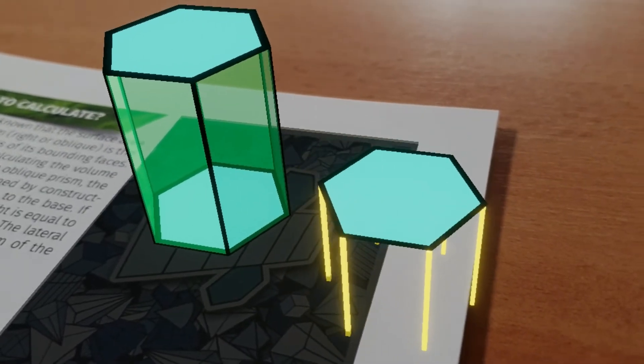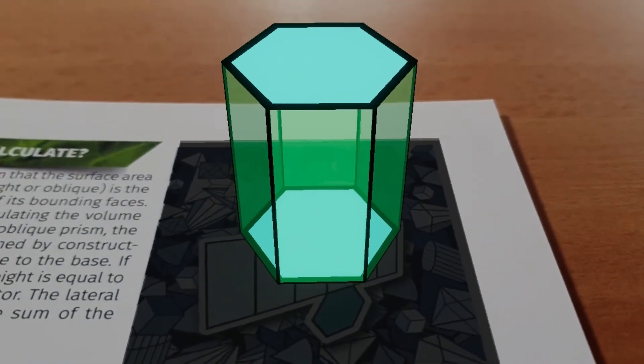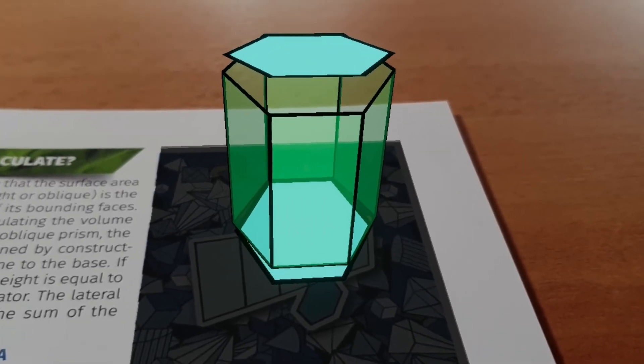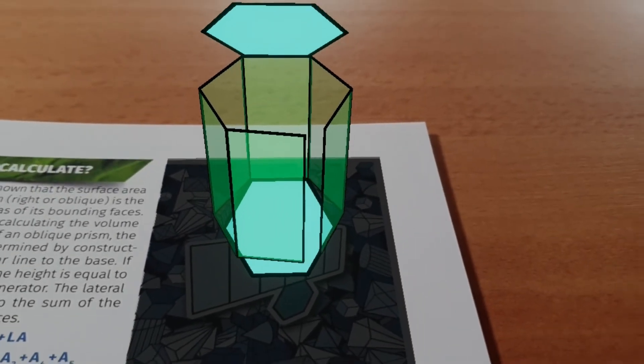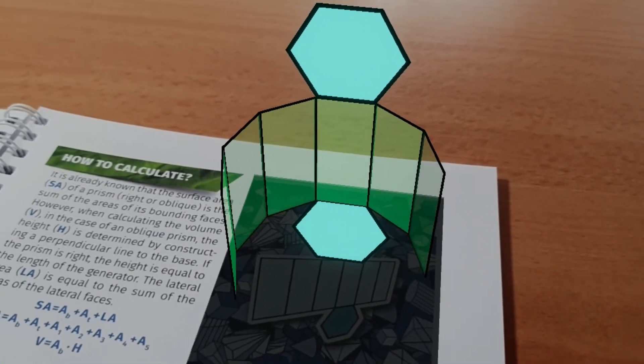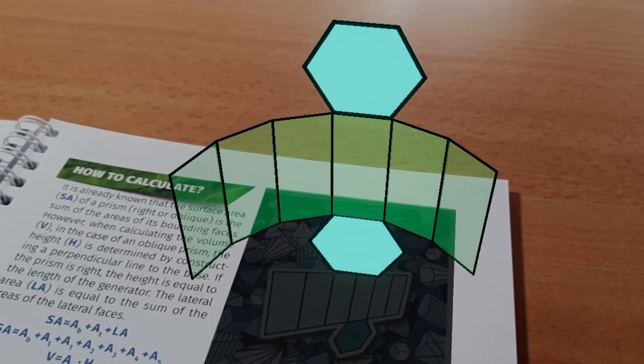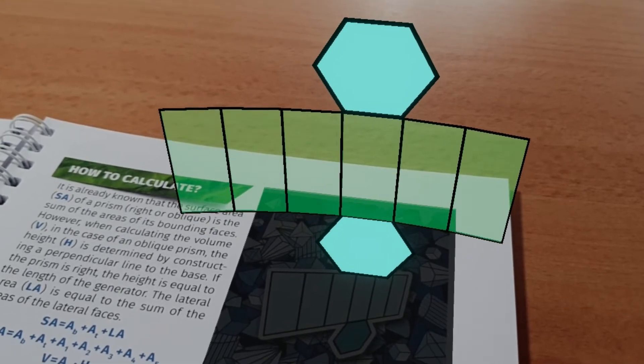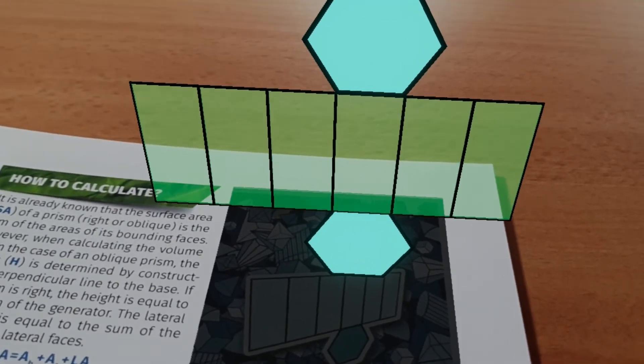In order to draw the net of the hexagonal prism shown in the picture, cut along its edges so that each face meets at least one of its adjacent faces in an edge. Continue cutting along the edges until the faces can be laid out in a plane.